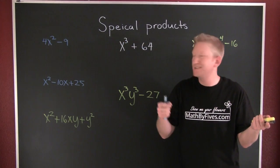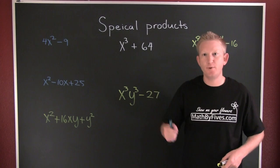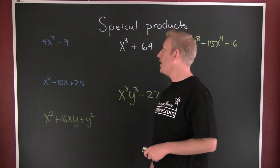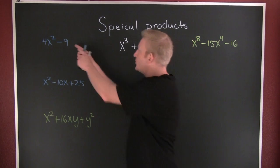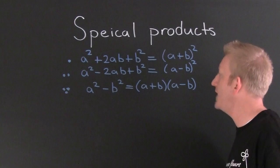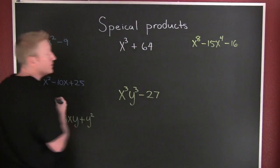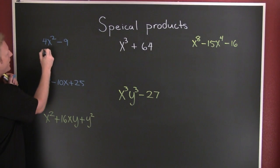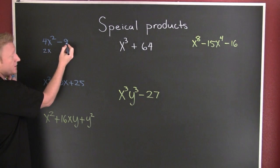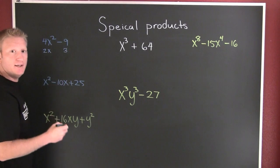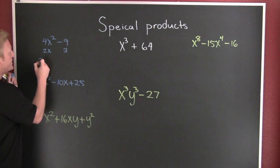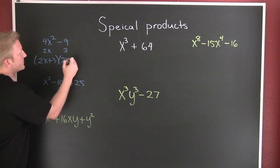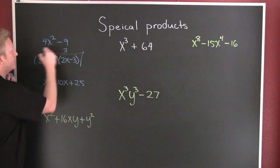I've got six special products ready. Which one is this? We see that's the difference of squares. Is this the square of something? Yes — 2x. Is this the square of something? Yes — 3. So every single time it's (2x + 3)(2x − 3).